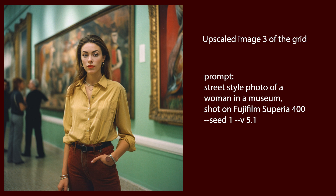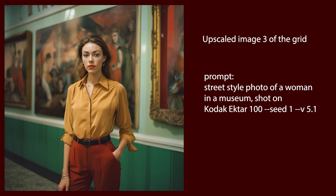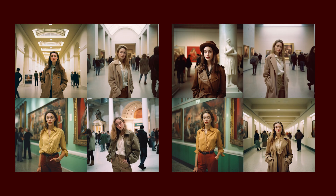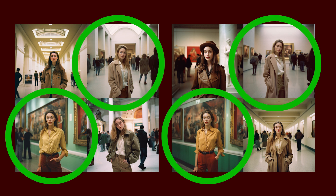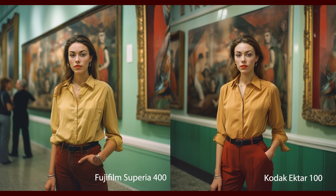Let's see if this character pops up again if we slightly change the prompt but keep the same seed number. We make a subtle change to the prompt, trying another film stock. And indeed that character shows up again. But as you can see from the initial grids, only two of the characters come out looking consistent. If we compare the upscaled images side by side, we can see the differences in color and contrast.